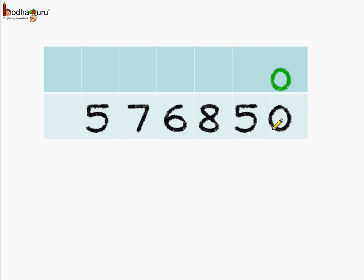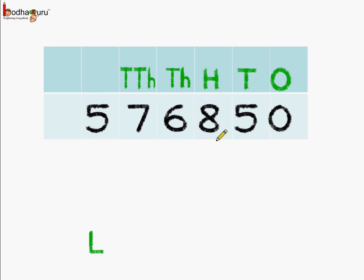So we have put 5,76,850 in the chart. Starting from the rightmost side: 1's place, 10's place, 100's place, 1000's place. Next comes the 10,000's place. And then the 1,00,000's place, which is called the lakh place. So now it becomes very easy to read the number.